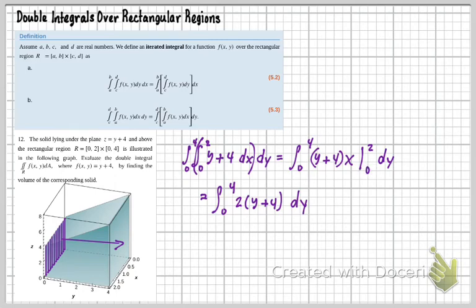From here, I can multiply the 2 through, which I will because it doesn't really make a difference. So that's 0 to 4, 2y plus 8 dy. Now we're going to integrate this.